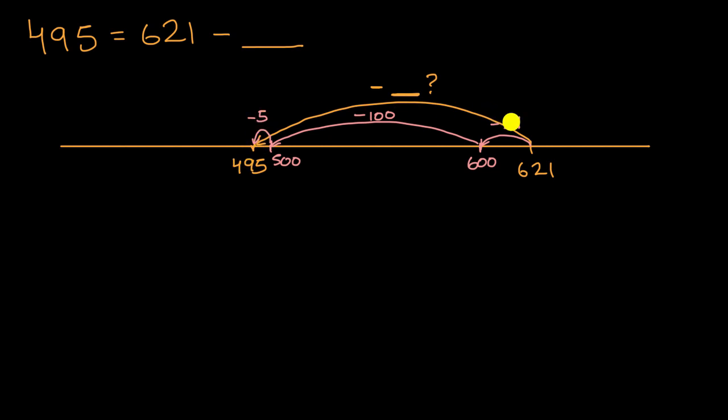I subtracted a total of 21, then I subtracted 100, then I subtracted 5. So I subtracted 100, I subtracted 21, and I subtracted 5. And so how much did I subtract in total?